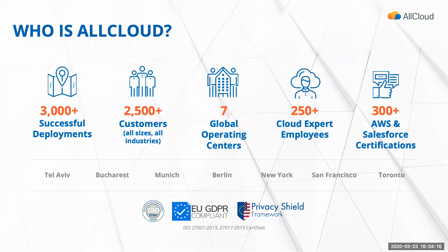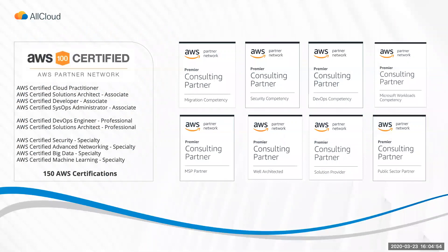All Cloud is a global company with seven global operating centers providing services for cloud platforms and infrastructures. We help our clients with big cloud projects. We have over 3,000 successful deployments, over 250 cloud experts, over 300 AWS and Salesforce certifications, and over 150 AWS certifications specifically in big data and machine learning. We're also an AWS Premier Partner.